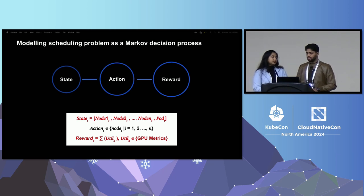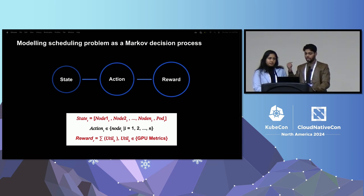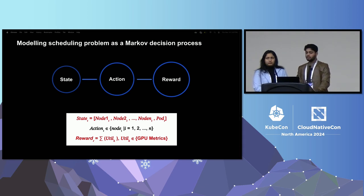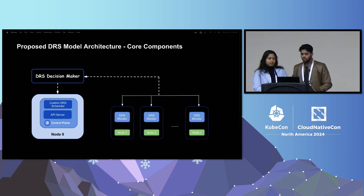To use RL, you need to first model the GPU scheduling problem as a Markov decision process (MDP). In an MDP, you have three things: a state, an action, and a reward. In our case, the state is a one-dimensional vector with normalized node and pod features — entries such as node 1, node 2, up to node N, and then the pod. The scheduler plays the role of the agent, whose actions are to select a node for a given pod to be executed, so the action space is all possible nodes in the cluster. The reward function of DRS reflects the average resource utilization across the cluster, which is a custom function taking into account different utilization metrics and can easily be customized to reflect particular situations.